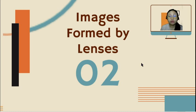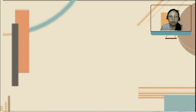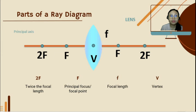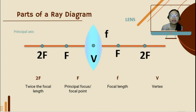We had also discussed the kinds of images before in our last video. Now let's see what images are formed by lenses. Before that, let's look at the parts of the ray diagram. To locate or describe the image formed — whether by a lens or a mirror — we have two ways: analytical, which involves computation using equations, or graphical, which is what we are doing here using rays.